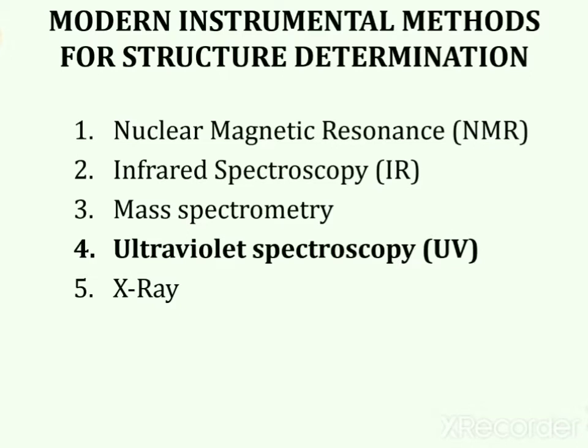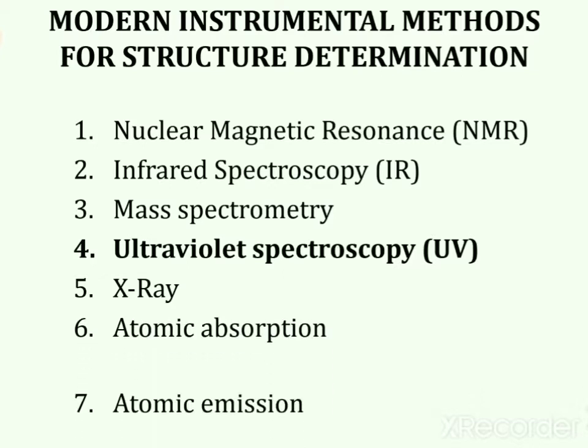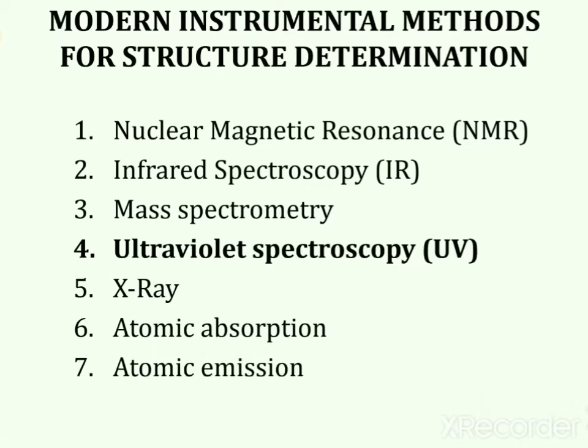The fifth method is X-ray Spectroscopy, used for the determination of surface morphology of different compounds. The sixth and seventh methods include Atomic Absorption and Atomic Emission Spectroscopy, used for the determination of various elements. Combined, all these methods are used for the determination of the exact structure of any compound under investigation.